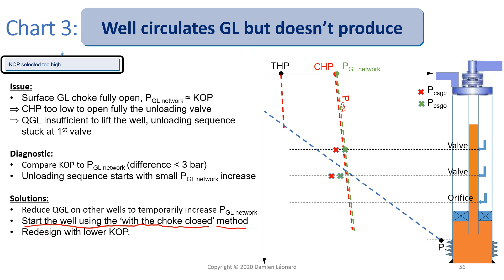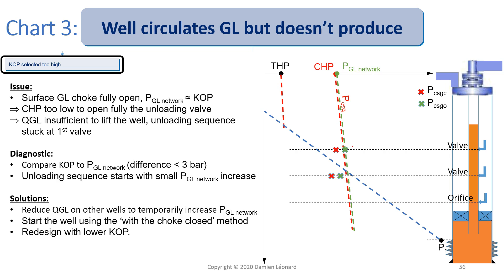With the choke closed method, what you want to try to do is use the tubing effect factor of the valve to make it easier to open. The last thing you could do is redesign with a lower kickoff pressure, so that when your casing head pressure is almost equal to the gas lift network pressure, this first valve would be fully open and allow you to circulate a much bigger amount of gas lift across it, thereby launching your unloading sequence. To understand this issue, you need to know how the injection pressure operated valve works and what the throttling effect is — refer to the gas lift equipment training if you need a refresher.